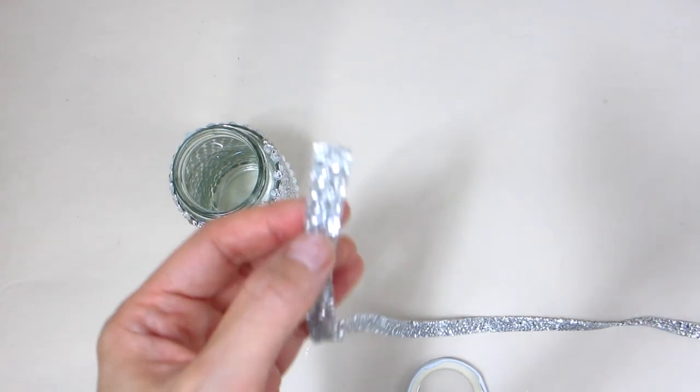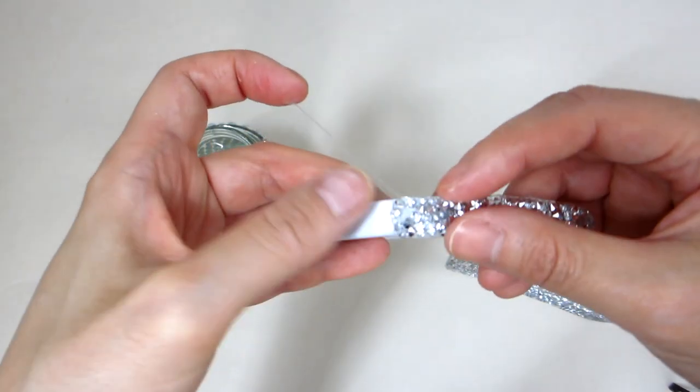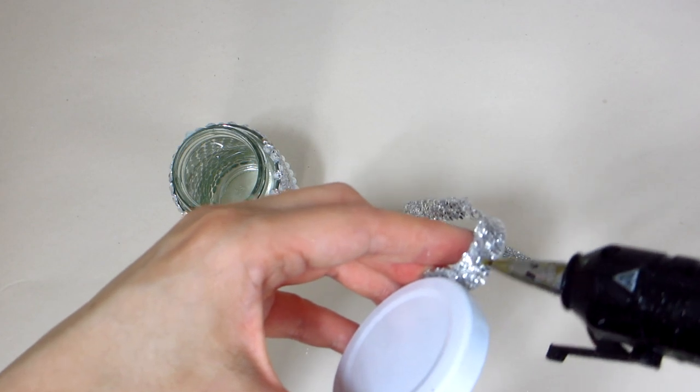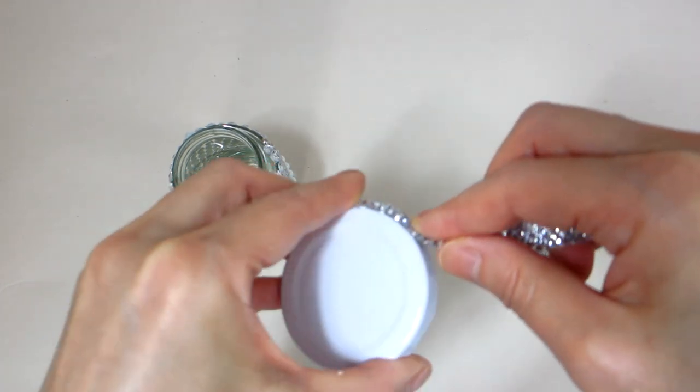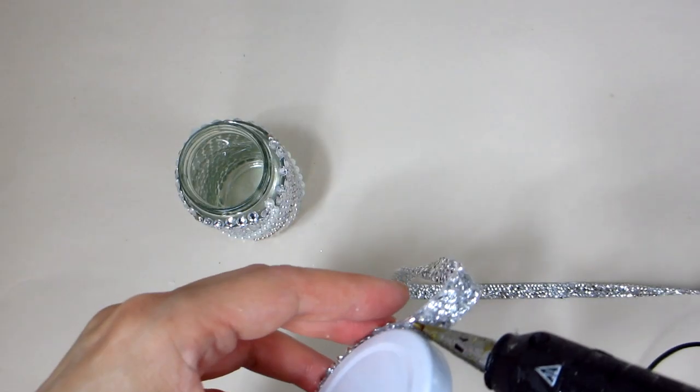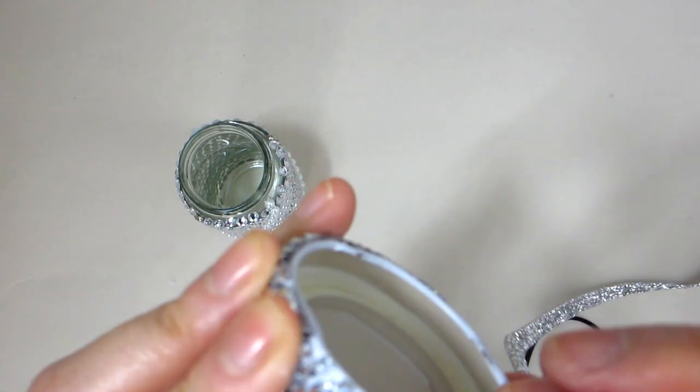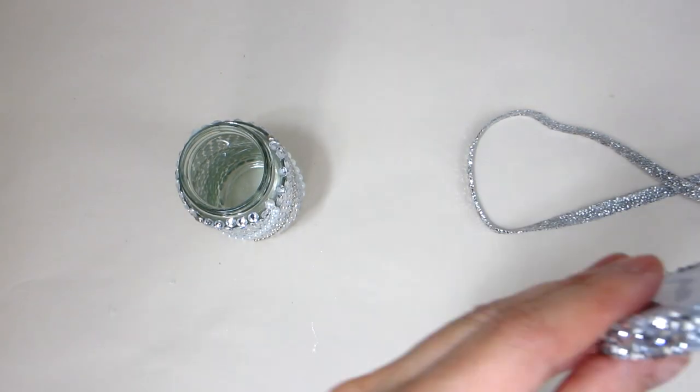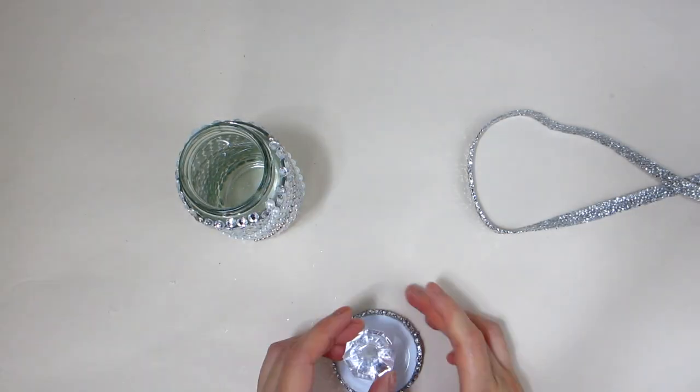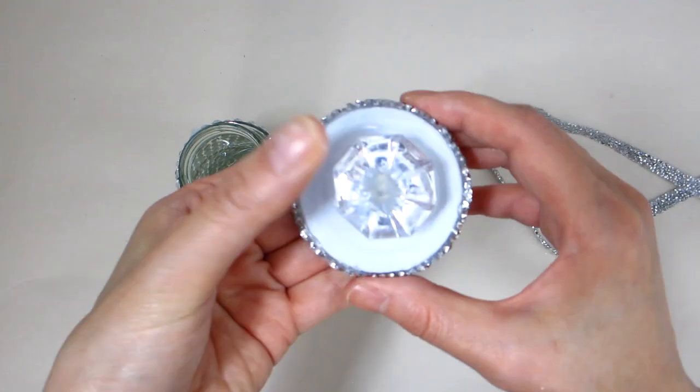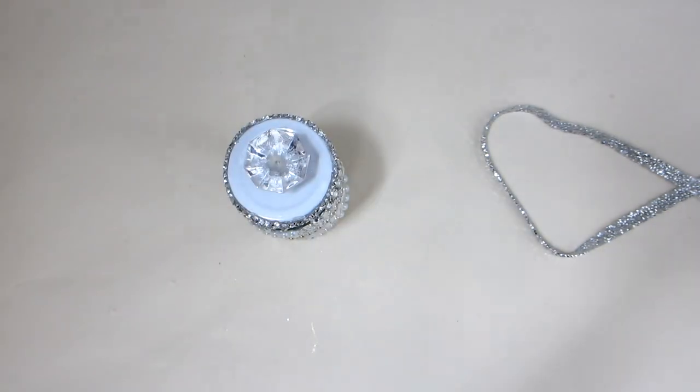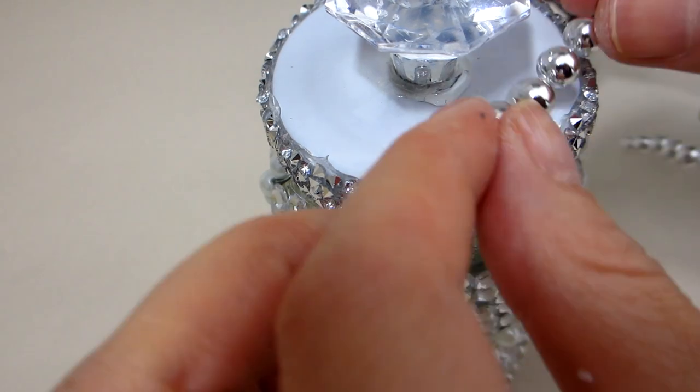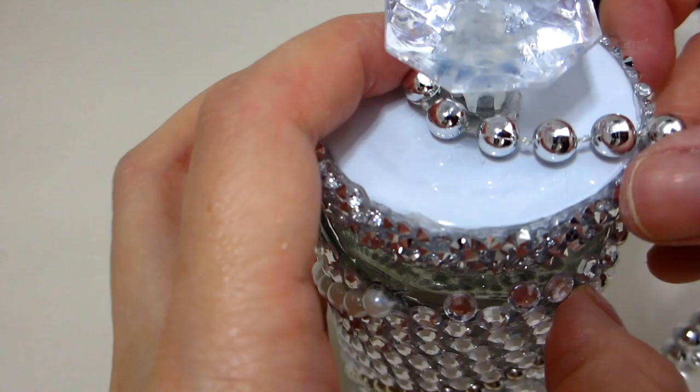Next we will take the lid that came with the jar and embellish the side with some silver rhinestone ribbon. Then we use some hot glue to adhere our homemade crystal knob to the top center of the lid. As a final touch for the lid, we will use some hot glue to adhere a small string of silver beaded necklace all around the knob.